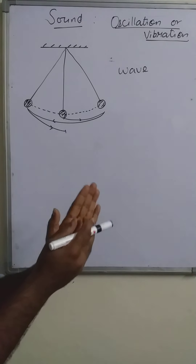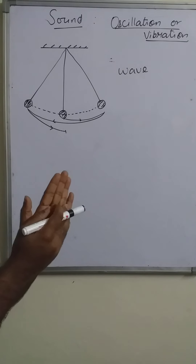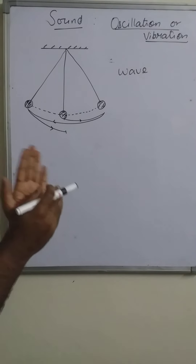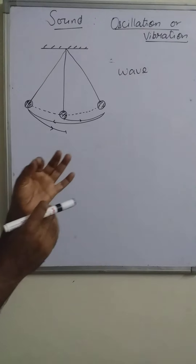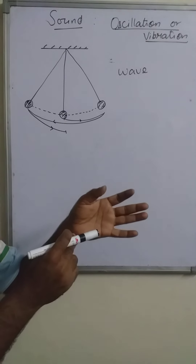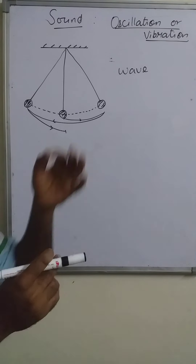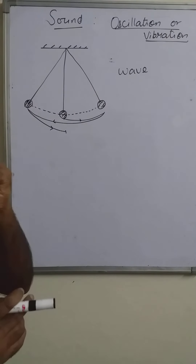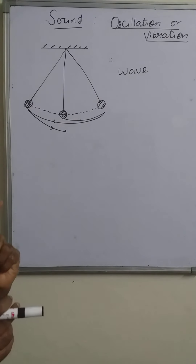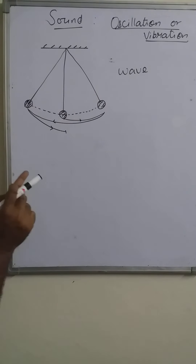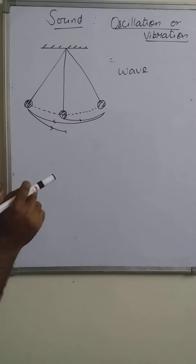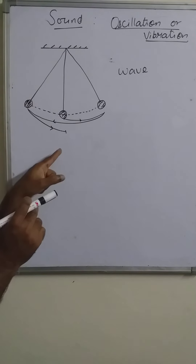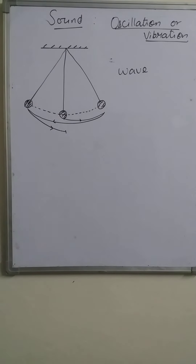A particle changes its position, and with every change in position, it takes some time. So the position of the particle is changing with respect to time. Here we are going to represent that change in position of a particle with respect to time.